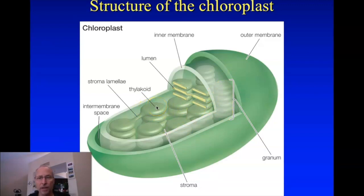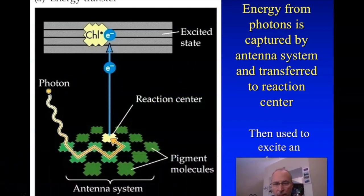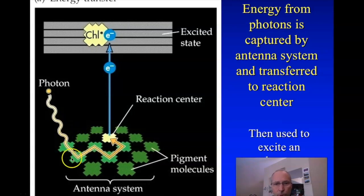These membranes have in them the pigments and machinery that drives both the light-dependent and light-independent reactions. Looking specifically at the thylakoid membrane, there is a system of pigments that will absorb photons impinging on that membrane. The photons come in and hit the pigment — specifically, the pigment has an electron that the photon will interact with. The electron is then boosted to a higher energy state, and that is the exact step where electromagnetic energy is transferred into chemical potential energy.